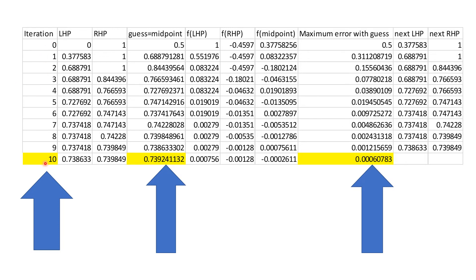Okay, so here are the iterations, and we have left-hand point and right-hand point. Our guess is always the midterm. We have to evaluate the function, which was cos(x) - x, at both the left-hand point, the right-hand point, and the midpoint. And we say, what's the maximum error associated with the guess? But then, what we're able to do is, depending on how the signs work out, we are able to determine what is the next left-hand endpoint and right-hand endpoint. So that's what I did here.